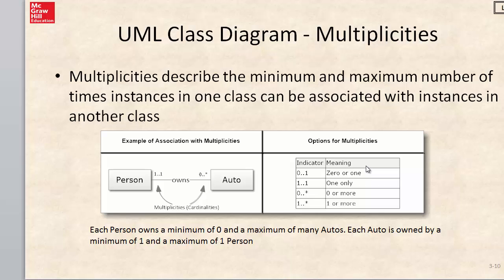We have four options for multiplicities. The minimum can be 0 and the maximum 1. The minimum 1 and maximum 1. The minimum 0, the maximum of many. The minimum 1 and maximum of many. And again, in our example, each person in our database owns a minimum of 0 and maximum of many automobiles. Each automobile is owned by a minimum 1 and maximum of 1 person.